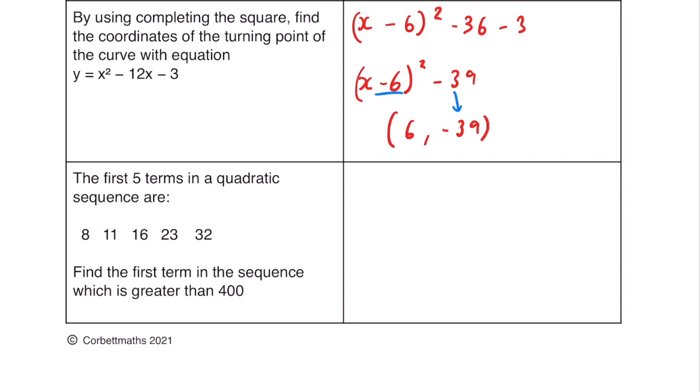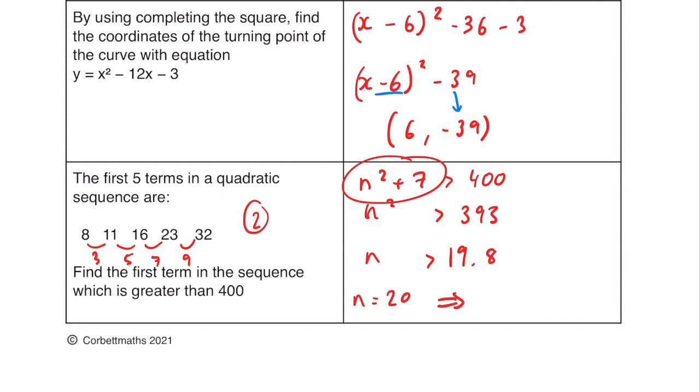The first five terms in a quadratic sequence are this, find the first term in the sequence that is greater than 400. If we find the nth term of this first, so if we find the differences, we have 3, 5, 7 and 9. Because that secondary difference is 2, this is going to be an n squared. If we rewrite n squared underneath, we have 8, 11, 16, 23, 32, n squared being 1, 4, 9, 16, 25. Get the differences of those, we get 7, 7, 7 and 7. So it is n squared plus 7. We want to find the first one that is greater than 400. So n squared is greater than 393, which is equal to 19.8. So if we substitute n equals 20 into our equation, then 20 squared is 400, add 7, we get 407. And that is going to be the higher plus sheet completed.